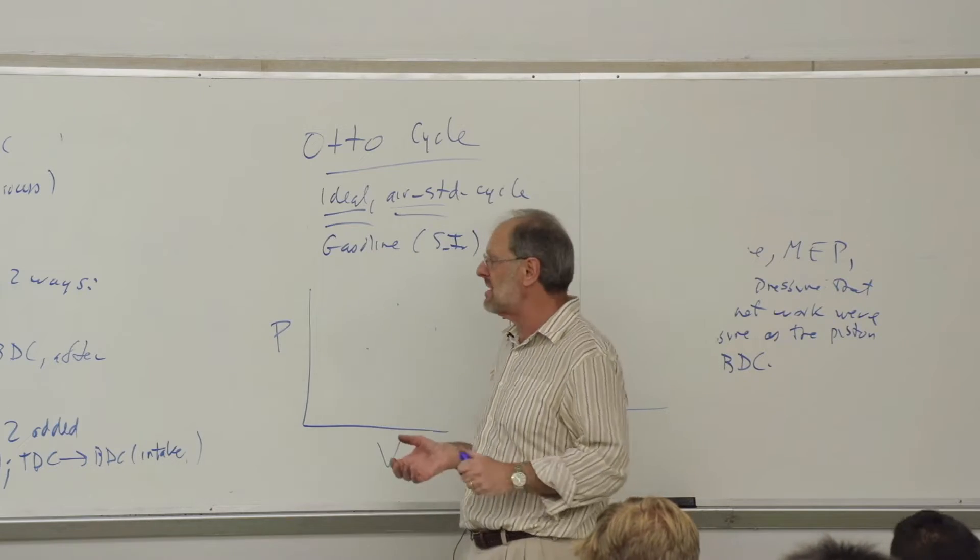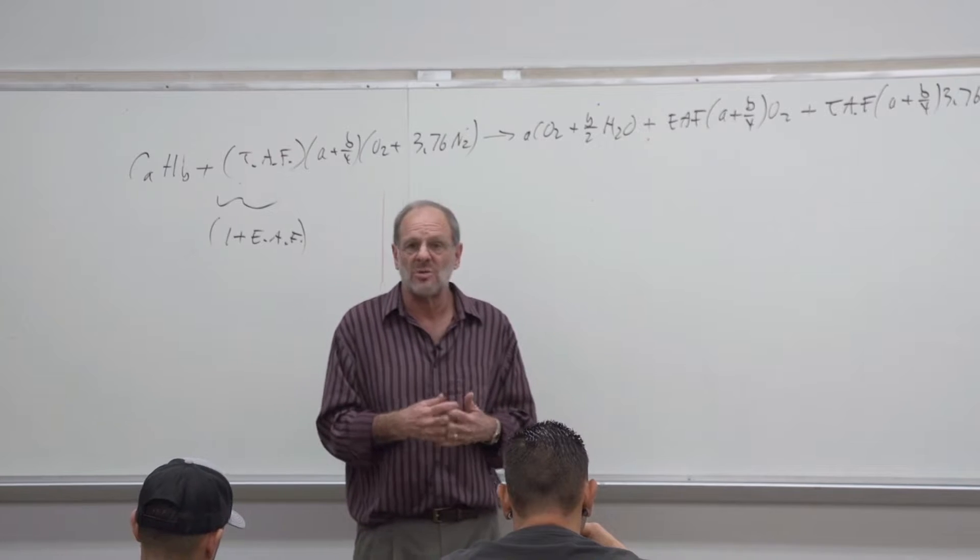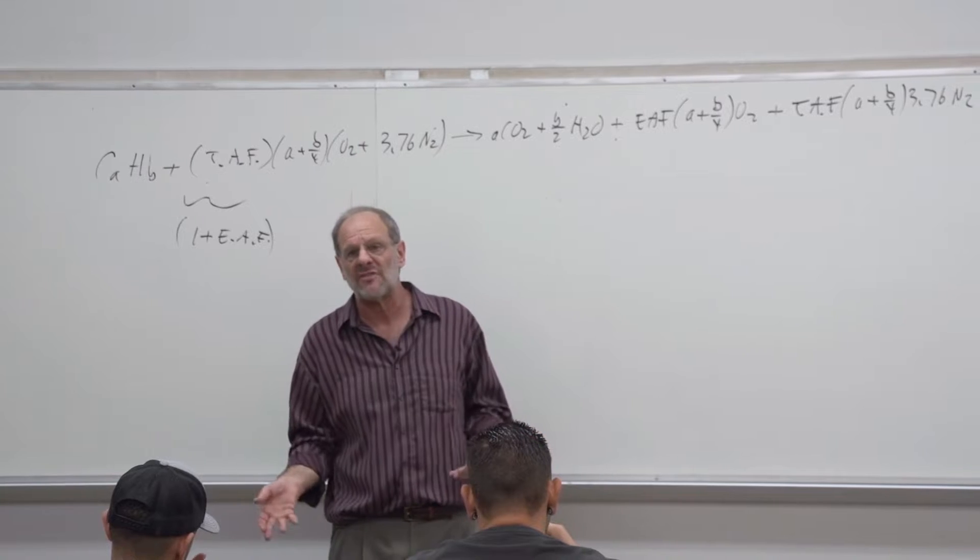Once we have the basic concepts, then we look at the first law itself, and then we look at variations of the first law for different types of processes. Then we get into what would be called the second law of thermodynamics, where we understand that there are limitations as to the processes that could occur. And then we start looking at all sorts of real world types of examples.